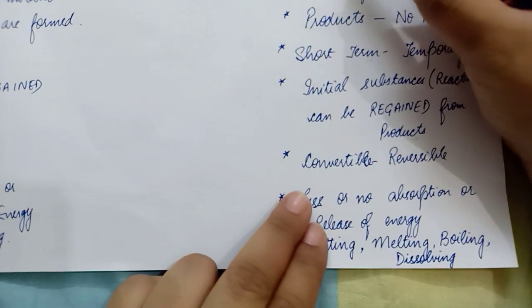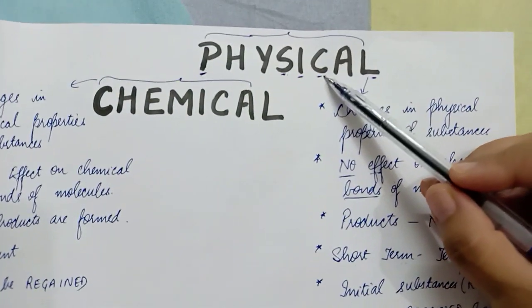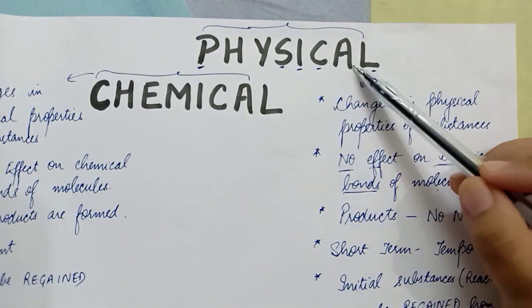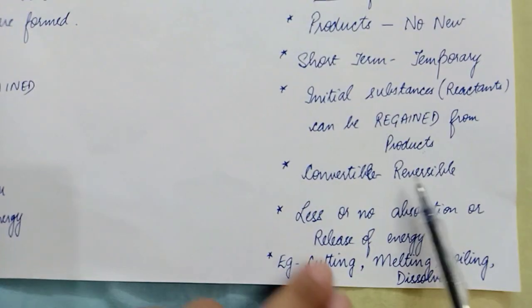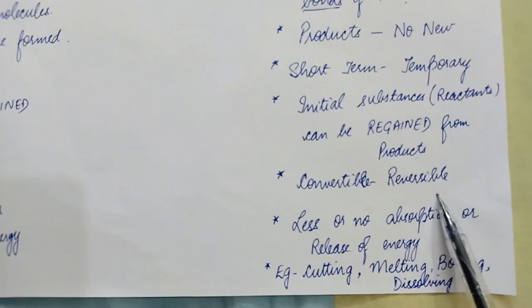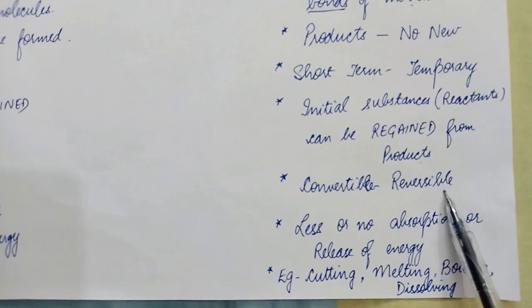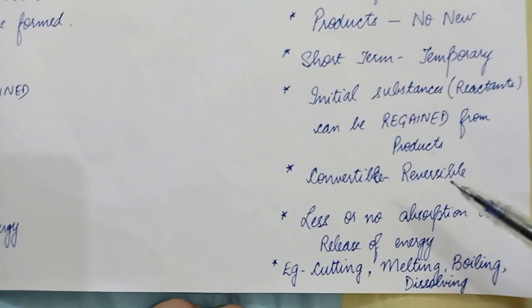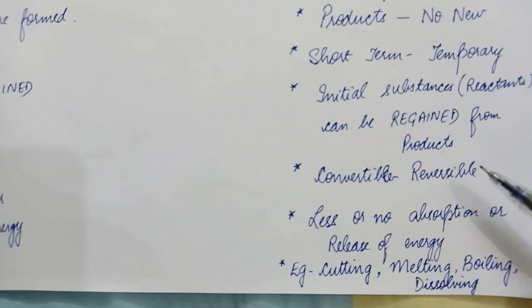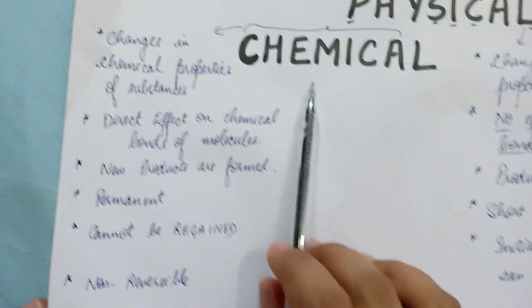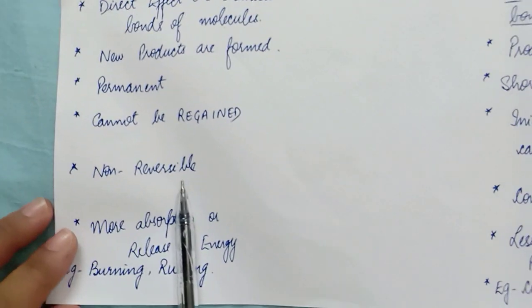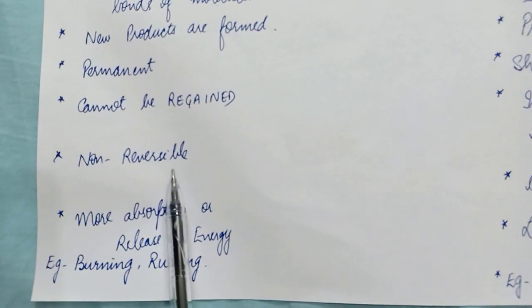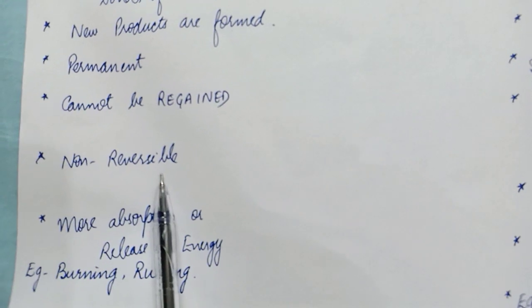The next difference comes from the alphabet C of 'physical.' All physical changes are convertible in nature — another word for convertible is reversible. So physical changes are reversible, as in the example of water and ice. On the other hand, chemical changes are non-reversible because they are permanent changes and cannot be reversed back.